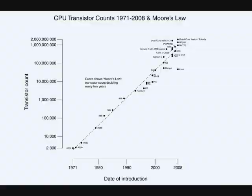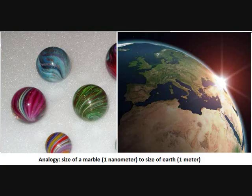By virtue of nanotechnology, we can still say that Moore's Law holds true today, which states that the number of transistors that can be placed in an integrated circuit doubles every year approximately. A nanometer is a billionth of a meter. To put it in context, a nanometer could be the size of a marble while a meter could be the size of the Earth.